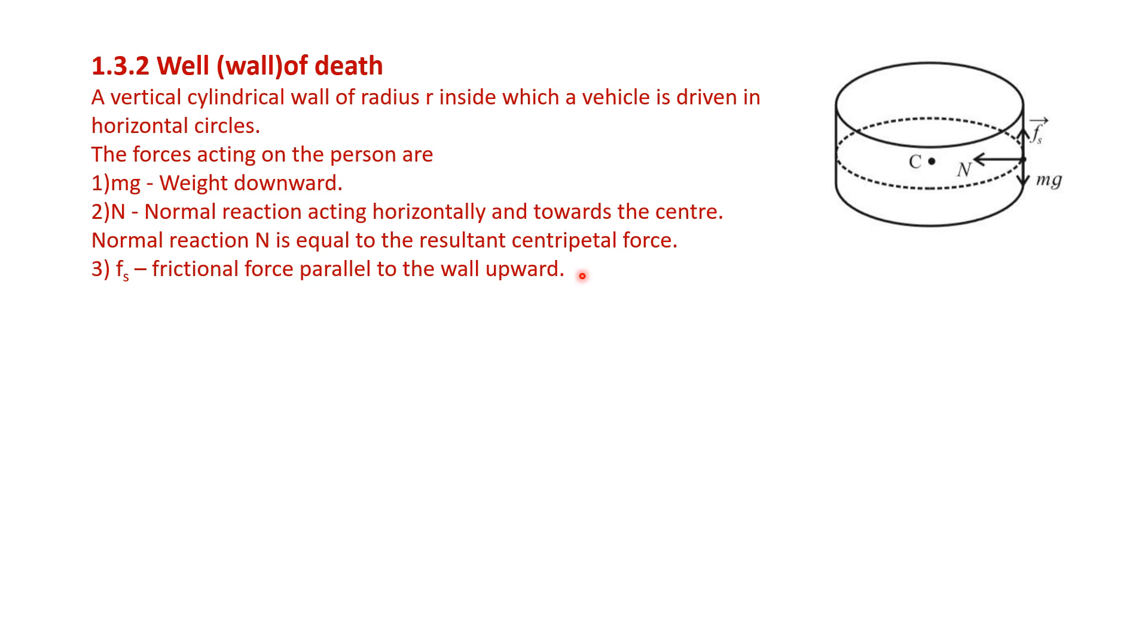Now, we will write all these things in mathematical manner. The first is N is equal to M R omega square is equal to M V square by R. Here, we will write that normal reaction is equal to resultant centripetal force. Therefore, in this equation, left hand side is N, that is normal reaction, and right hand side is centripetal force. Here, M is mass, R is radius, omega is angular velocity, and V is linear velocity.